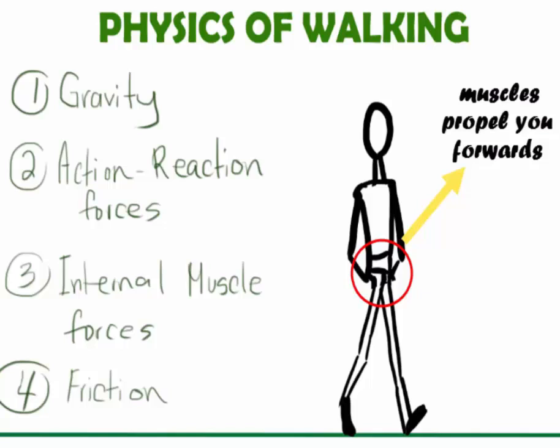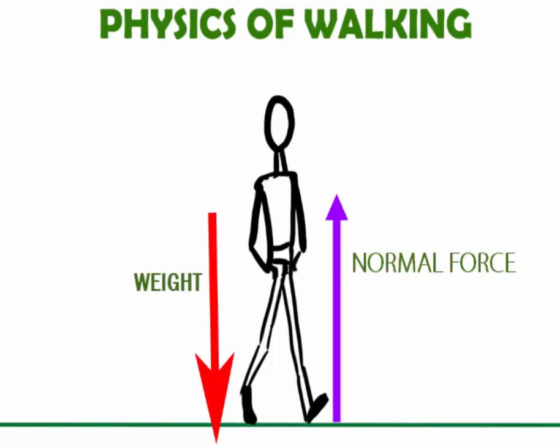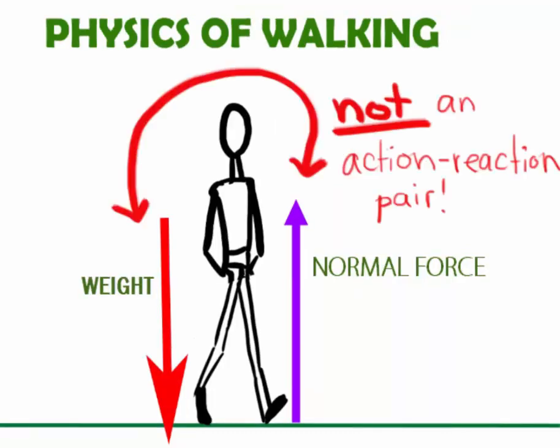Let's talk about gravity first. When you walk, weight pulls you towards the center of the Earth. In response to weight, the normal force exerts a force upwards that supports you. Without this force, there would not be friction and you would not be able to walk. The two forces are balanced as indicated by the length of their vectors. Note, this is not an action-reaction pair.